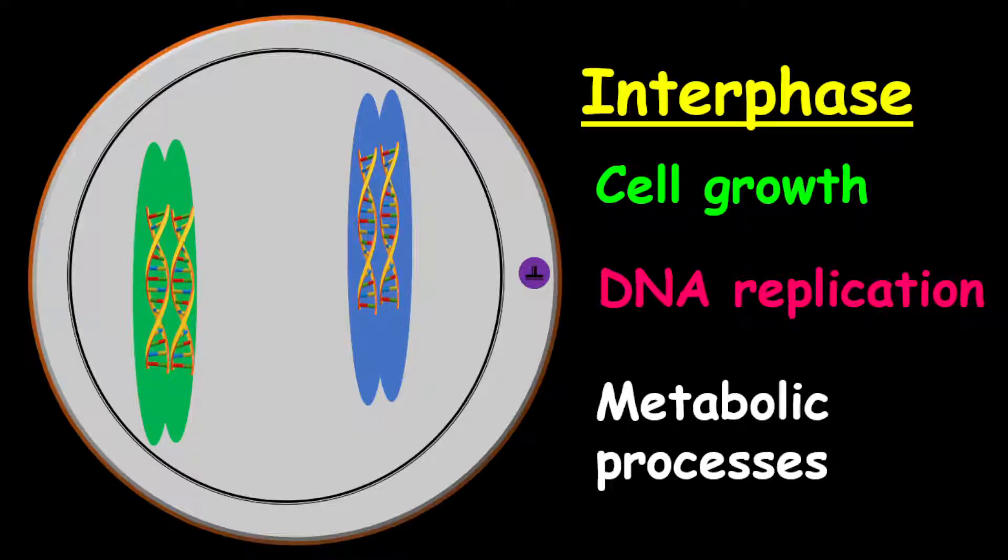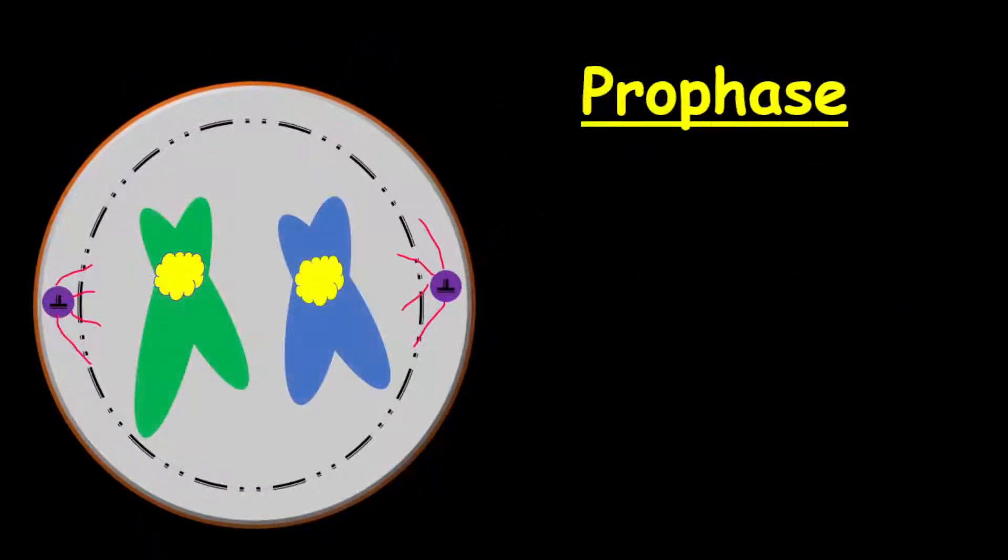Now, after the interphase, we will go into mitotic division. This is where the nucleus will divide. And the first phase of the mitotic process is called the prophase.